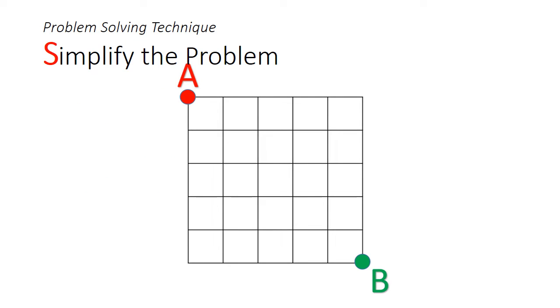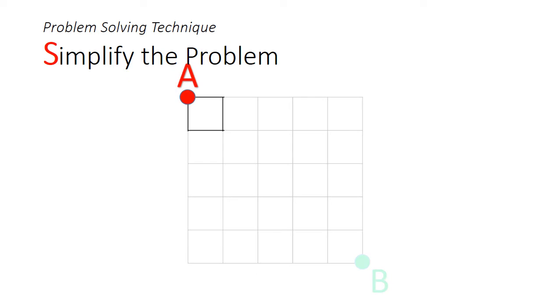Let's go through the answer. The problem solving technique here is to start with a simplified version of this problem. So instead of a 6x6 grid, let's look at it as a 2x2 grid first. There is only one way to get to the step on the right, and only one way to get to the step below.